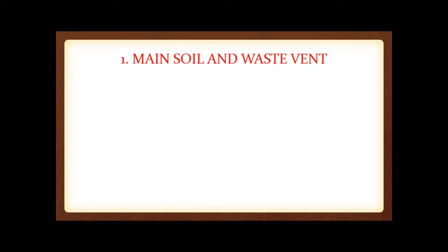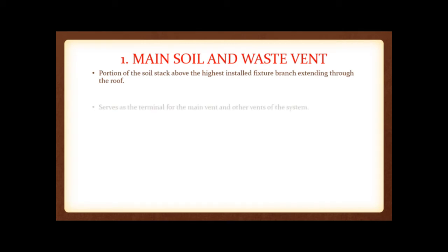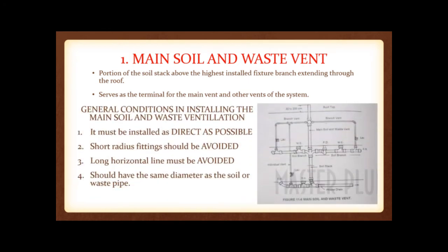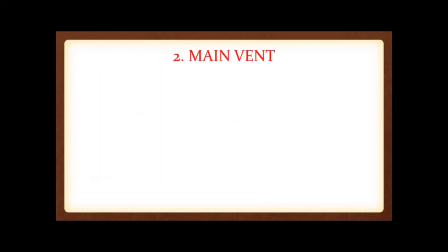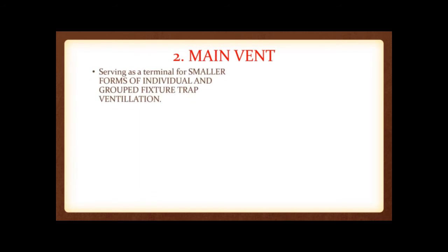The first type is the main soil and waste vent — the portion of the soil stack above the highest installed fixture branch extending through the roof, serving as the terminal for the main vent and other vents of the system. Four general conditions for installing it: it must be installed as directly as possible, short-sweep fittings should be avoided, long horizontal lines must be avoided, and it should have the same diameter as the soil or waste pipe. The second type is the main vent, which serves as a terminal for smaller forms of individual and group fixture trap ventilation, also referred to as the collecting vent line.